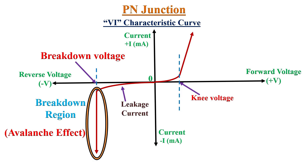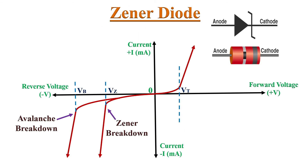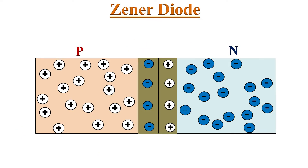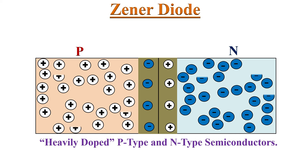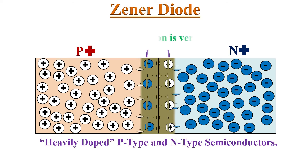For normal diodes, the breakdown region of operation must be avoided. However, there are some special types of diodes that can handle breakdown voltage without any damage — these are known as Zener diodes. In Zener diodes the breakdown mechanism is different from the avalanche effect; it is known as the Zener breakdown effect. Unlike a normal PN junction diode, the P and N type regions of a Zener diode are heavily doped, meaning the number of charge carriers in these regions is much higher. The P and N regions are denoted as P+ and N+.